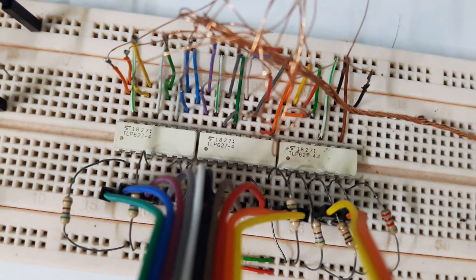For isolation between Arduino Uno and high voltage DC step-up module, I use opto-isolation chip from Toshiba TLP627.